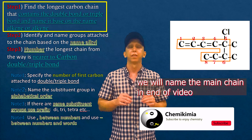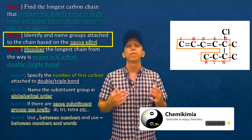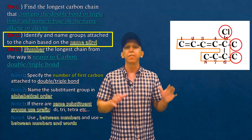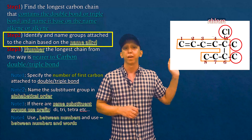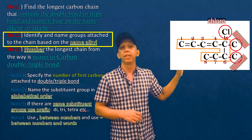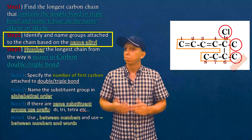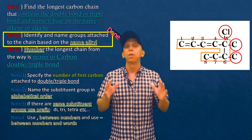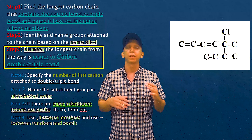Step one is done. In step two we have to specify the substituent groups. In here we have two substituent groups: we have a chloro, and we have a methyl and another methyl below the top methyl. Step two is done.